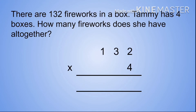Step 2: times our multiplier by our tens digit, so 3 times 4 equals 12. You put down the 2 and carry the 1. Step 3: times our multiplier by our hundreds digit — 1 times 4 equals 4, plus the carried 1, which equals 5.